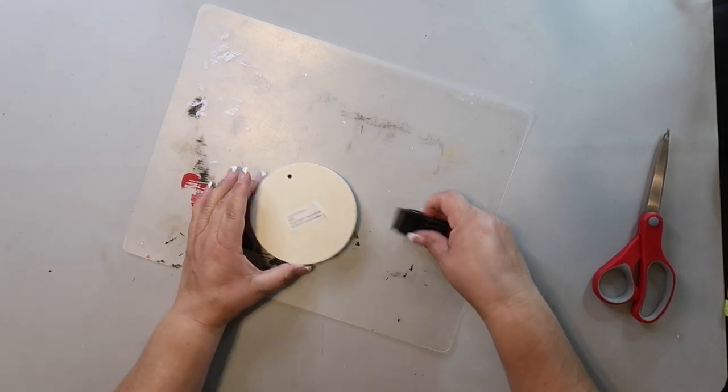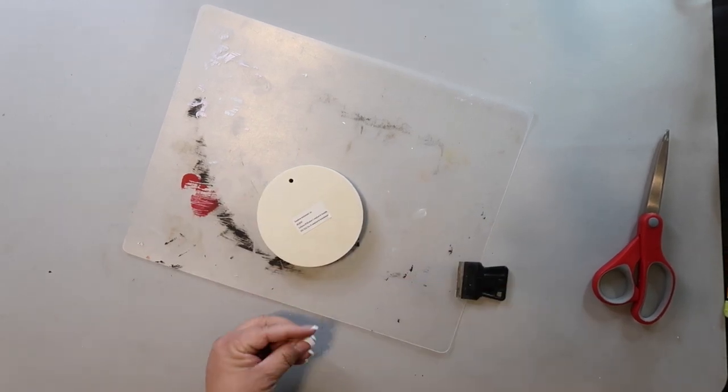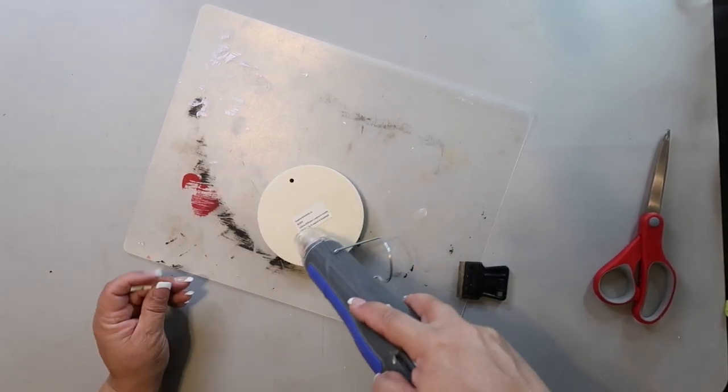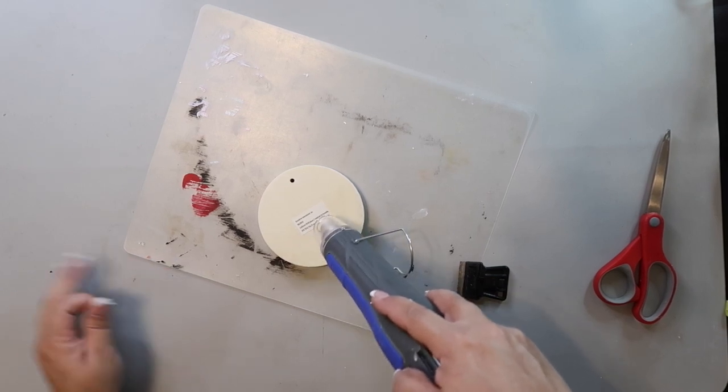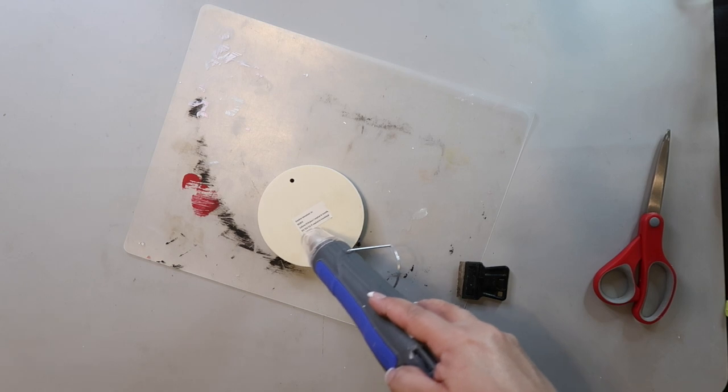Sometimes I have to use my heat gun if they are stubborn like this one is. If you don't have a heat gun, you can always use a hairdryer. I just heat it up for a few seconds to warm up that adhesive and then use that blade to scrape it off.